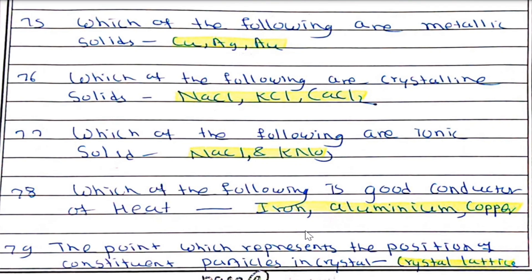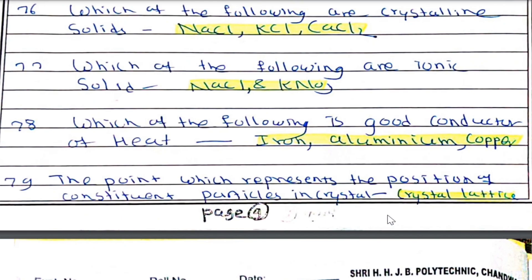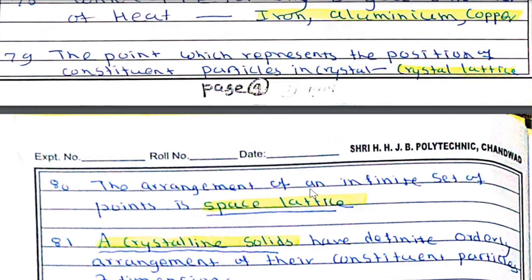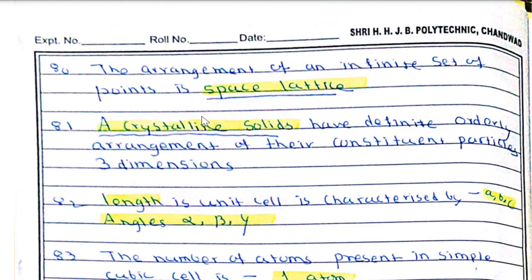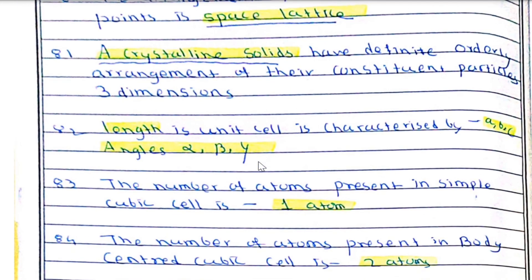Good conductors of heat include iron, aluminium, and copper. The point which represents the position of constituent particles in a crystal is known as the crystal lattice. An arrangement of an infinite set of points is known as a space lattice. A crystalline solid has a definite, orderly arrangement of constituent particles in three dimensions. The length of a unit cell is characterized by a, b, c, and angles by alpha, beta, and gamma.